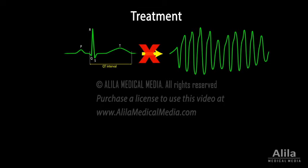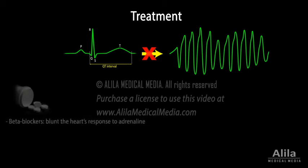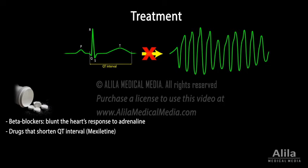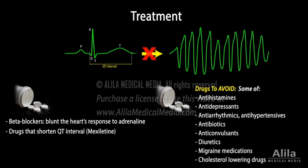Treatment aims to prevent a Long QT heart from developing dangerous arrhythmias. Most patients are treated with beta blockers, which blunt the heart's response to adrenaline produced during exercise and stress, making the heartbeat slower, thus reducing the risks for torsade de pointe. Medications that shorten QT interval may also be prescribed. On the other hand, medications that prolong QT interval or precipitate development of torsade de pointe must be avoided. Patients are also advised to seek immediate treatments for conditions that may result in low potassium in the blood.